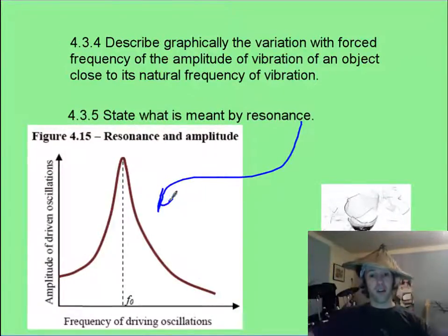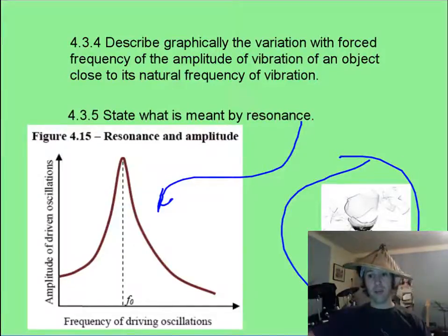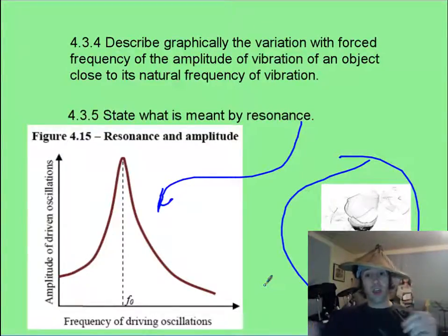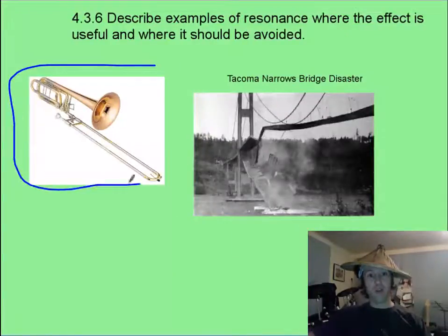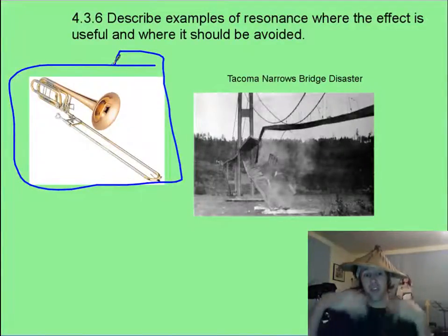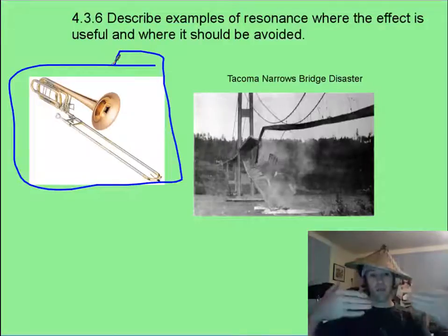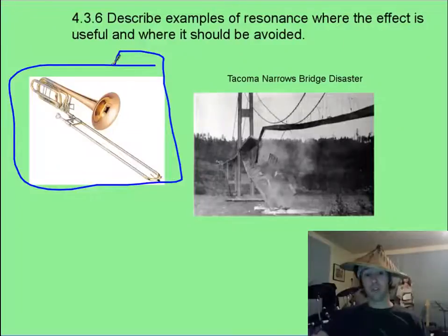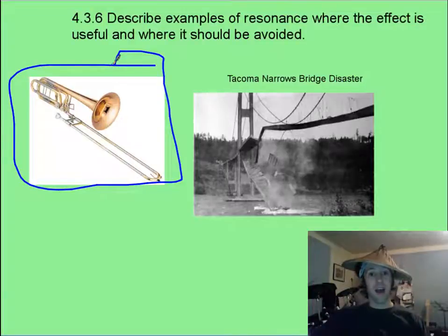When the driving frequencies match the natural frequencies of a particular object, you get massive oscillations — and that's also what's happening in musical instruments. A trombone, by changing its length, changes its natural frequency, and it selects one of the driving frequencies coming from your lips, producing resonance in the trombone. If you want to resonate at higher frequencies, you shorten the trombone and it resonates at a higher frequency.